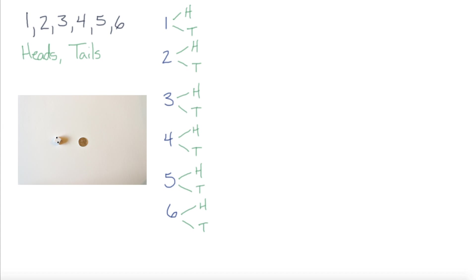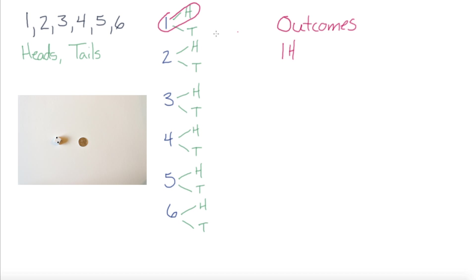We can now list all of our outcomes. I'm just going to title this off to the side as 'outcomes.' Looking at our tree diagram, I can see that I could get a one and heads — so I'm going to write 1H for heads. Or I could get one and tails — so one, T for tails.